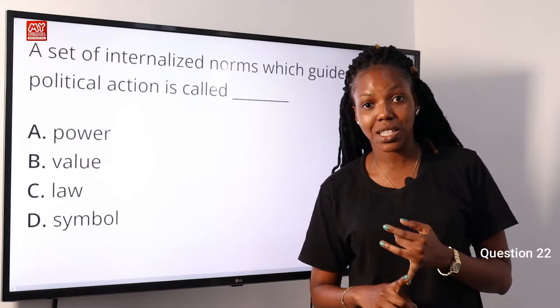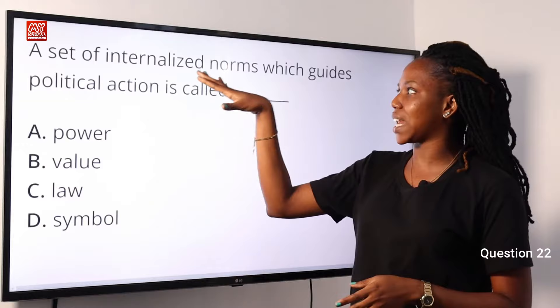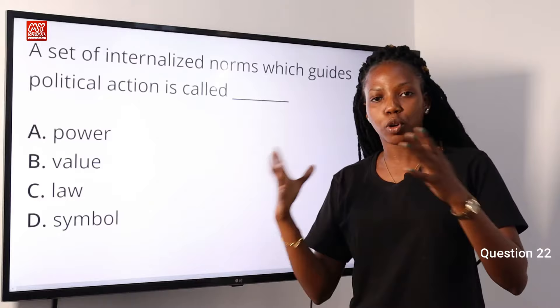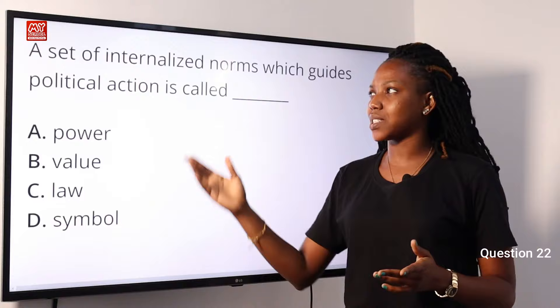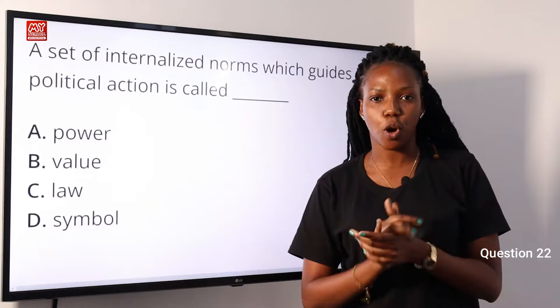Let's look at the question again: a set of internalized norms. A norm would mean normal or typical of something, and it would also mean a rule. So let's look at it as a set of internalized rules which guides political action — the answer is law. Option C is the correct answer.